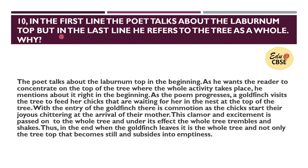In the first line the poet talks about 'the laburnum top,' but in the last line he refers to 'the tree' as a whole — why? The poet talks about the laburnum top in the beginning to make the reader concentrate on the top of the tree where all the activity takes place. As the poem progresses, the goldfinch visits the tree to feed her chicks waiting in the nest at the top. With the entry of the goldfinch, there is commotion as the chicks start their joyous chittering, there is wing flapping, and this whole activity passes to the rest of the tree — the clamor and excitement spread to the whole tree, which trembles and shakes.